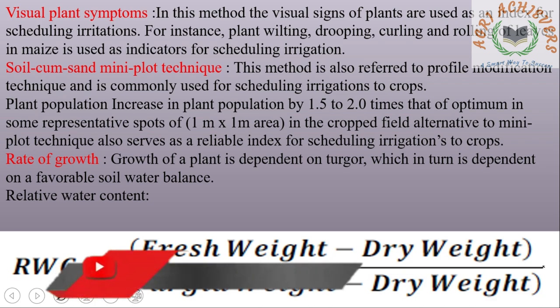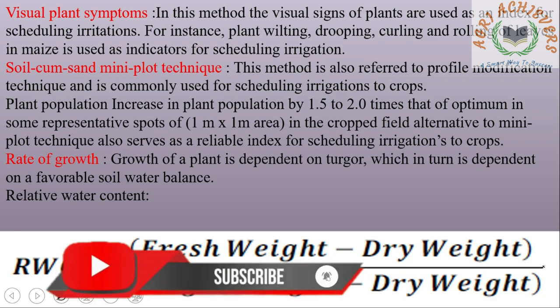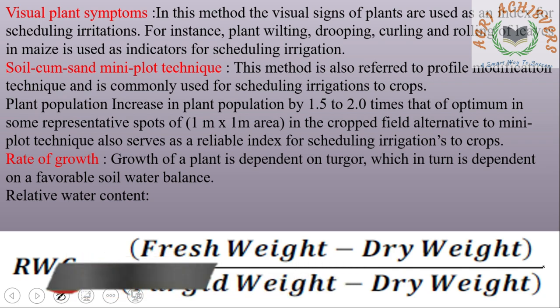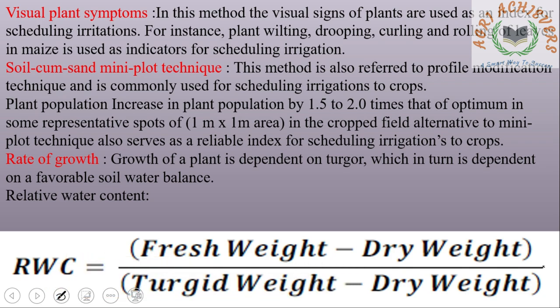Mini Plot Technique: This method is also referred to as the profile modification technique and is commonly used for scheduling irrigation to crops. Plant population is increased by 1.5 to 2 times that of the optimum in some representative spots of 1 meter × 1 meter area in the cropped field. Alternatively, the mini plot technique also serves as a reliable index for scheduling irrigation to crops.